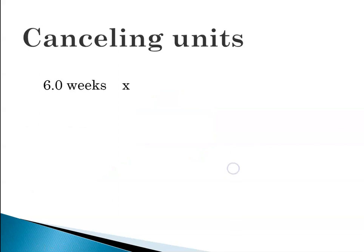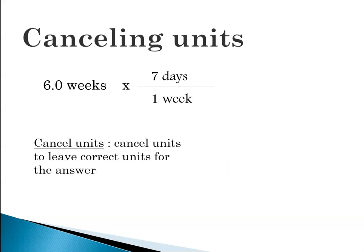Now we've got to cancel units. So we've got 6.0 weeks times seven days is one week. That's our conversion factor. We're going to cancel our units so that we end up with the units that we're looking for, which is days. So we're going to cancel out weeks divided by weeks equals one. It disappears.